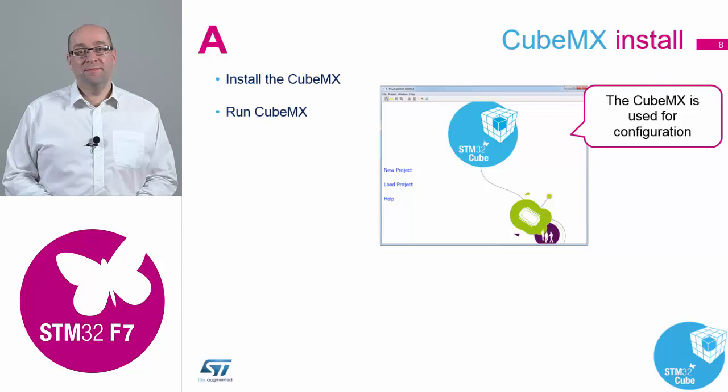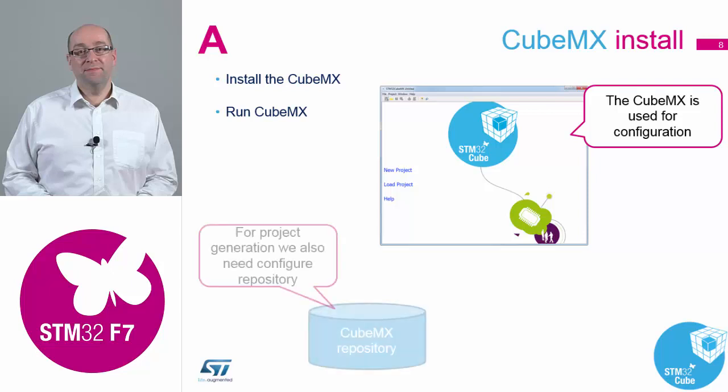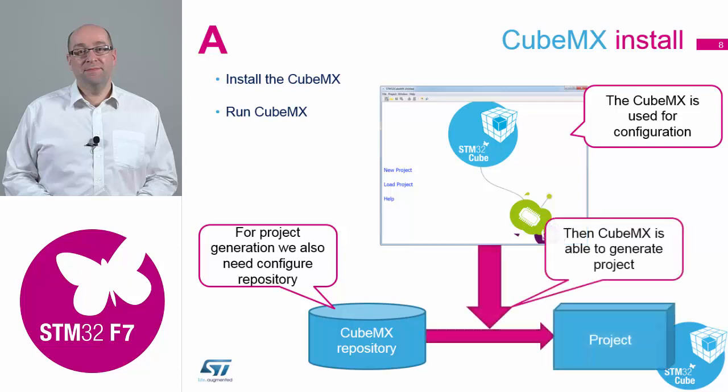Your CubeMX interface is fairly easy — you can load a project, start a new project, or go into the settings of the device. When you download each of the library packs, it creates a folder on your hard disk at users/your account name/STM32Cube where it stores all these files. This is called the repository. When you generate your project, it copies only the files you've requested from the repository into your specific project workspace.